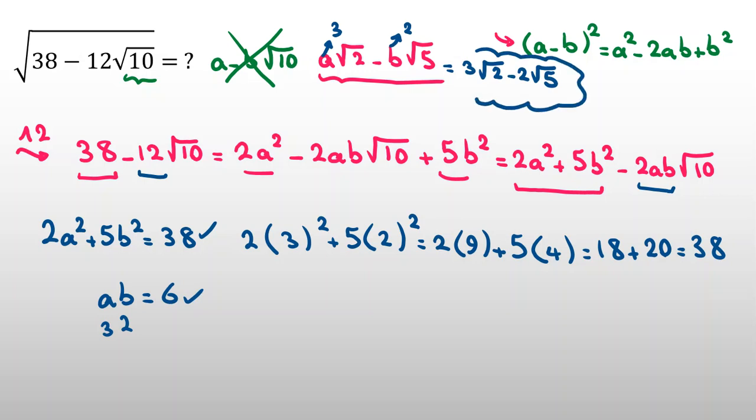And, let me write homework for you. Like this problem, try to calculate square root of 57 minus 12 times square root of 15. Solve this and comment your answers below this video.